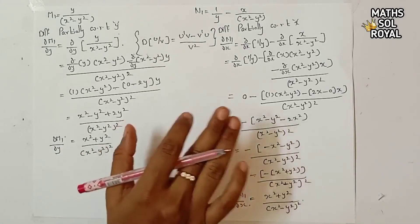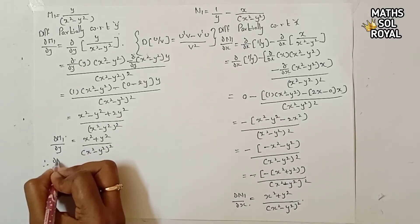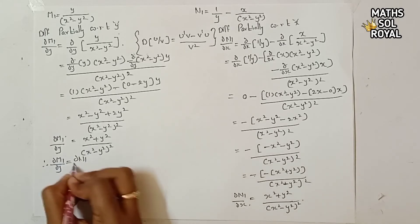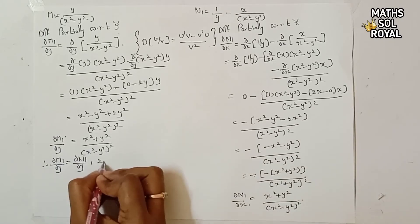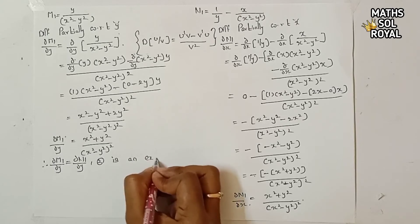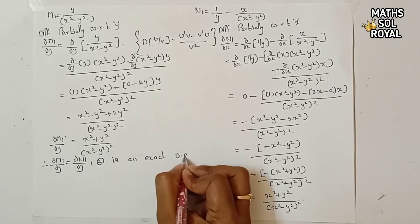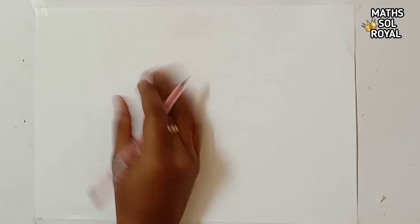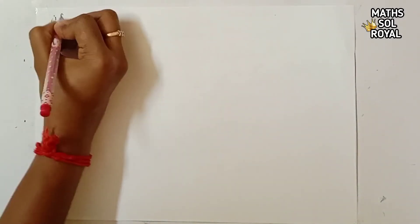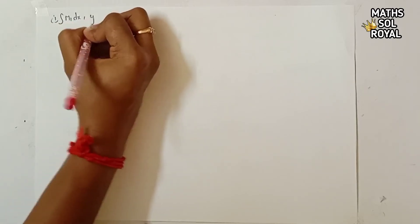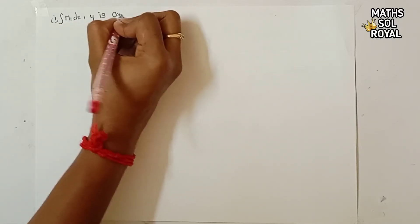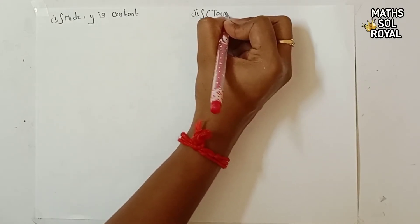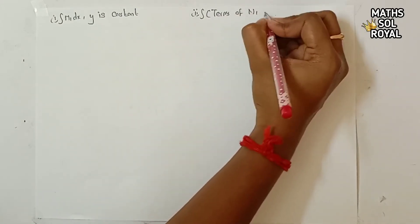Since ∂M₁/∂y = ∂N₁/∂x = (x² + y²)/(x² - y²)², equation 2 is an exact differential equation. The next step is to integrate M₁ dx (treating y as constant) and add terms of N₁ not containing x.